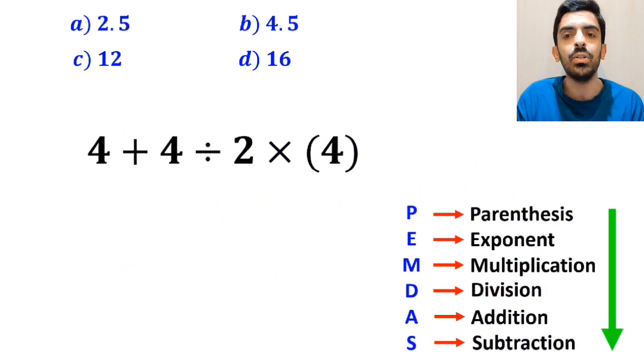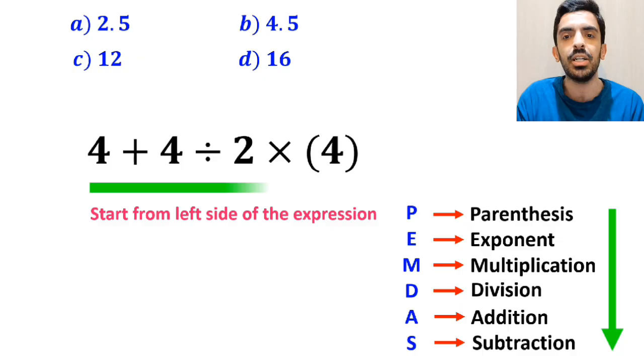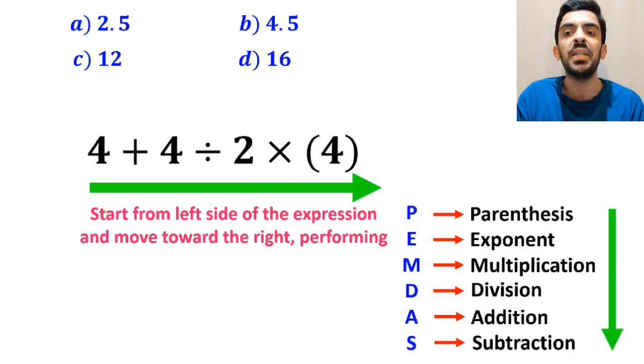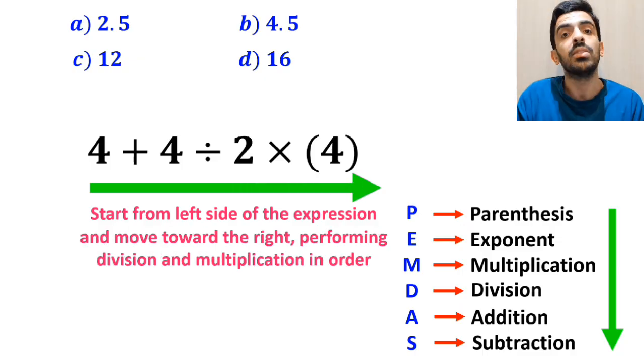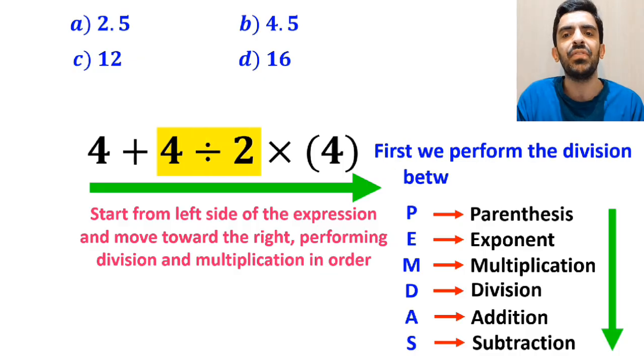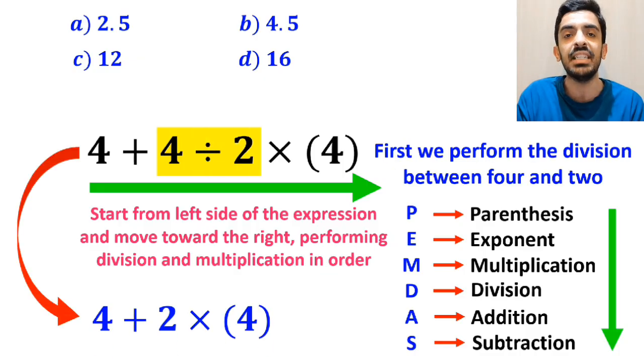In this case, the best thing to do is to start from the left side of the expression and move toward the right, performing division and multiplication in order. So, first we perform the division between 4 and 2, which simplifies this expression to 4 + 2 × 4.